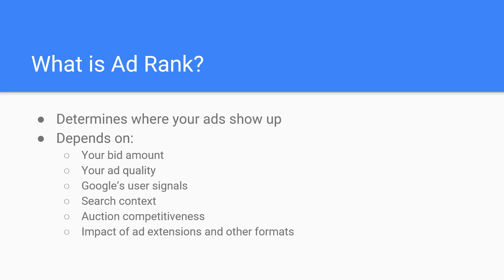Your bid amount — this is pretty simple. This is the amount that you are willing to pay to show up in a specific position when a user searches a keyword. There are minimum and maximum thresholds for this.